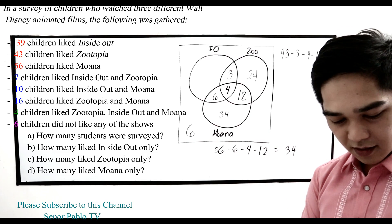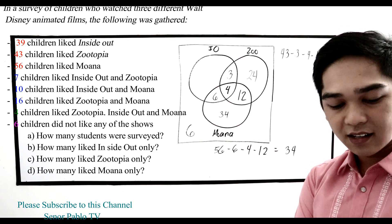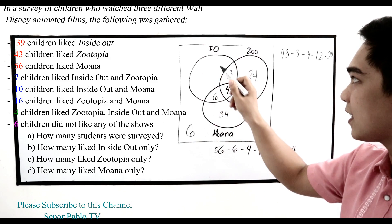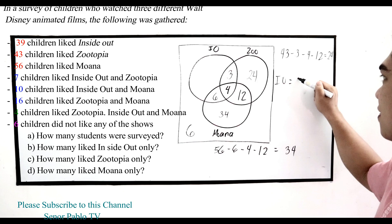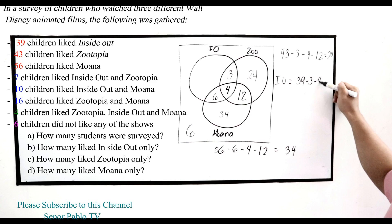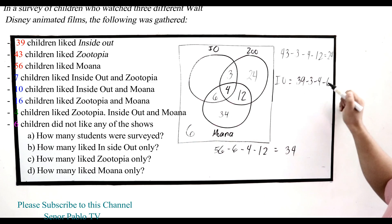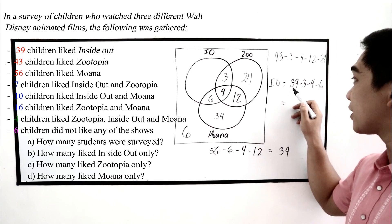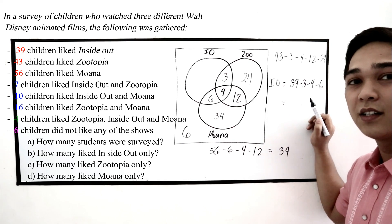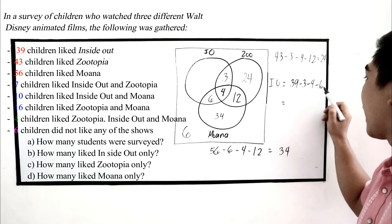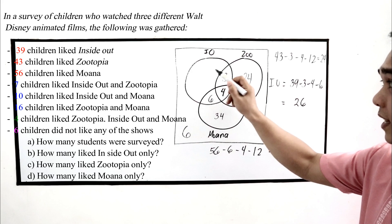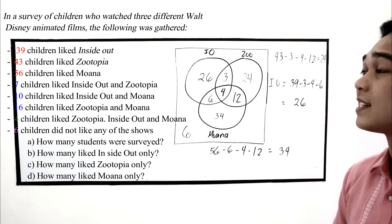Next, Inside Out: 39 like Inside Out. We subtract the intersections: minus 3 (Inside Out and Zootopia), minus 4 (all three), minus 6 (Inside Out and Moana). So 39 minus 3 equals 36, minus 4 equals 32, minus 6 equals 26. We write 26 in the Inside Out-only region.